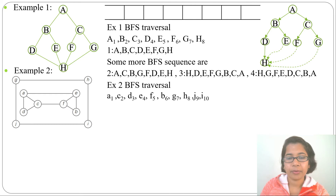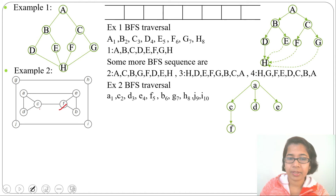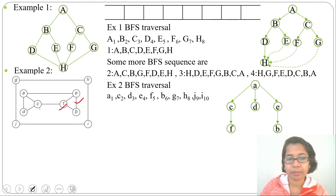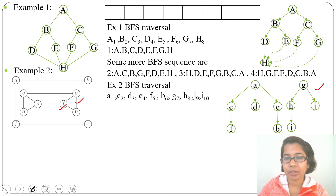Now let's build the BFS tree. From A we visited C, D, and E, so A's children are C, D, and E. From C we visited F, so C's child is F. From E we visited B, so B is E's child. That completes the inner BFS tree. For the outer part: from G we visited H and J, so G's children are H and J. From H we visited I, so I is H's child. This is the BFS forest — two BFS trees.